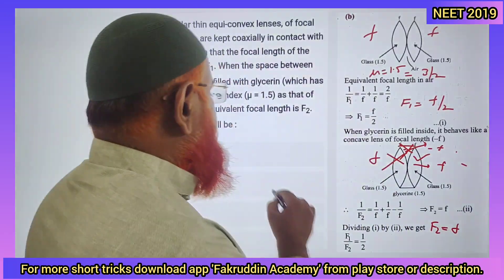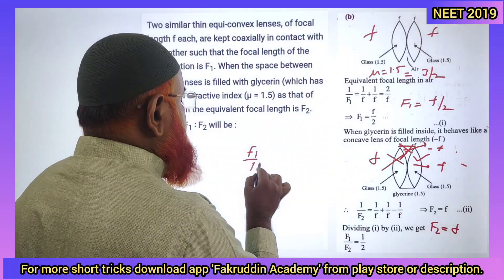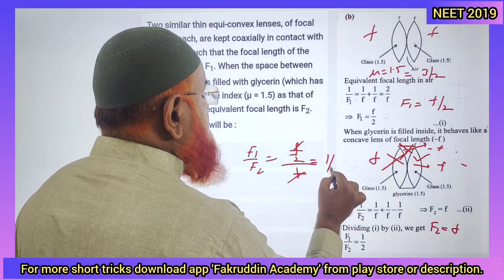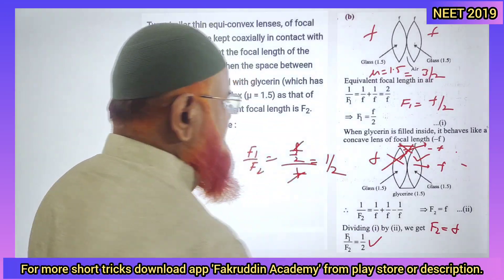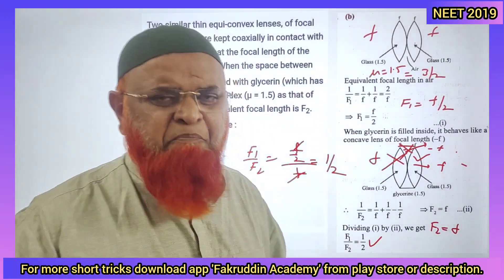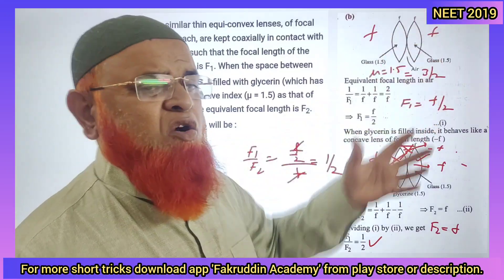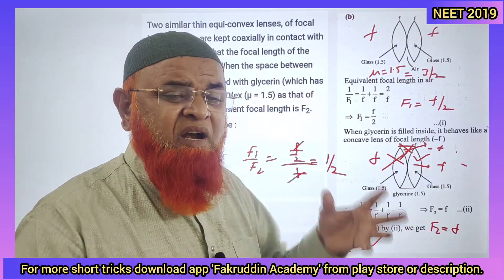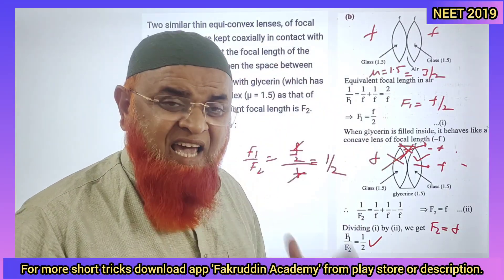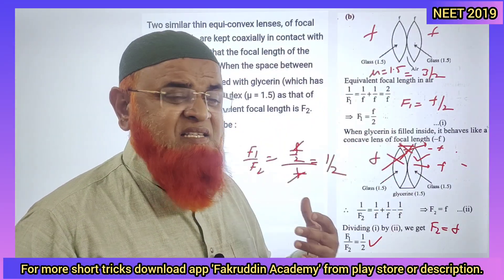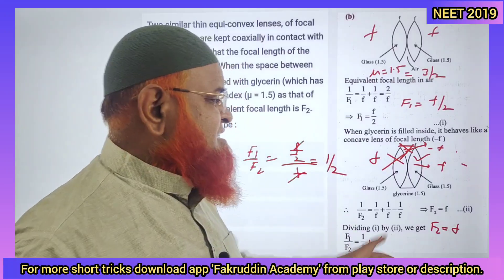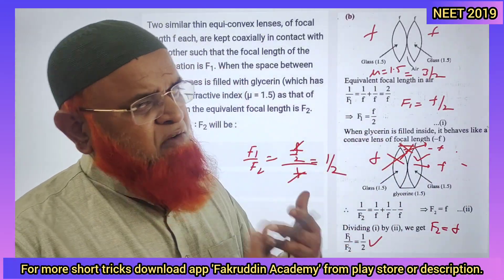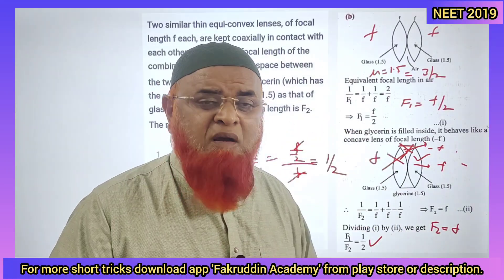No need to solve this in detail. You can just write F1 by F2 equals (F/2) by F. Getting cancelled, 1 by 2 is going to be your answer. The simple method is: whenever the convex lenses are clubbed, focal length becomes half. Whenever glycerin is in the middle with the same refractive index, one positive and one negative lens cancel out, leaving only one lens. The answer is F. Find the ratio and you will get 1 by 2. So simple it is.